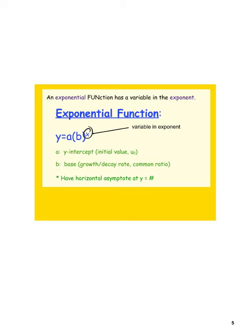So 'a' is going to be the y-intercept, the initial value. The value of 'b' is what's called the base, and it's going to have a horizontal asymptote. Our default will be y equals zero, and we'll work off of that as we continue forward.